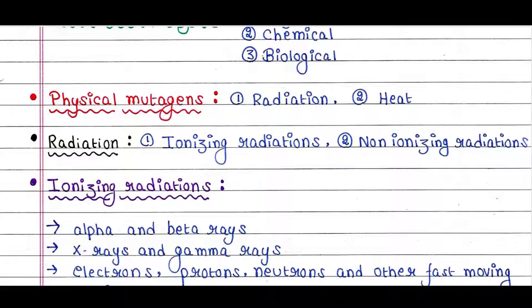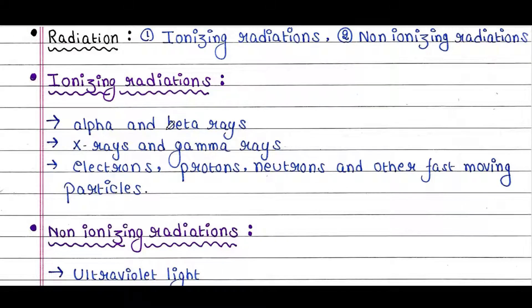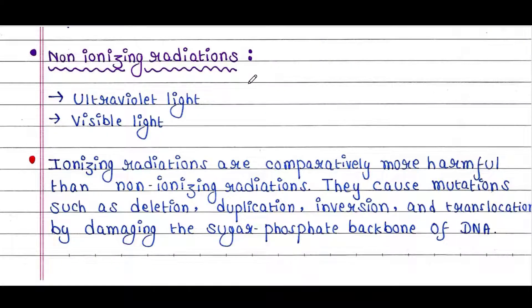Ionizing radiations include alpha and beta rays, X-rays and gamma rays, electrons, protons, neutrons, and other fast-moving particles. Non-ionizing radiations include ultraviolet light and visible light.